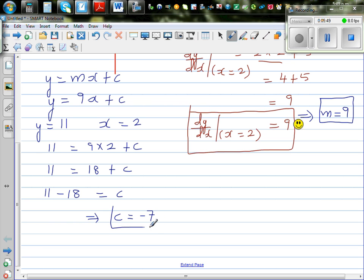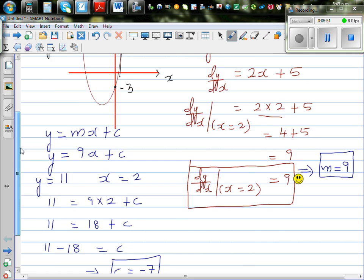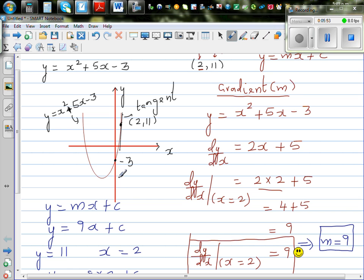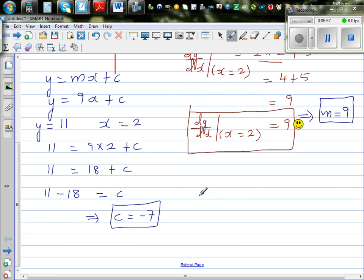And it does make sense. If you think about this line, it has to have a negative y intercept, so the answer makes sense. So therefore, you can say the equation of tangent is y equals 9x minus 7.